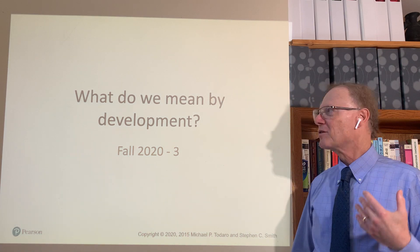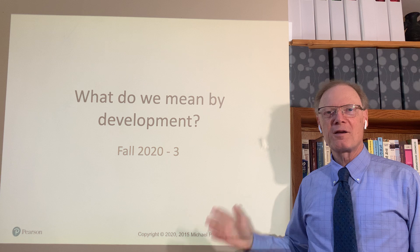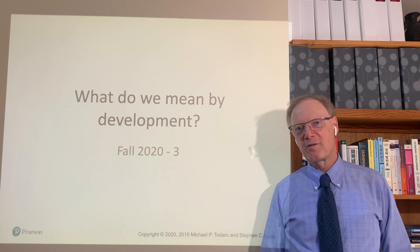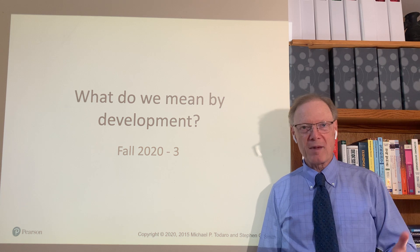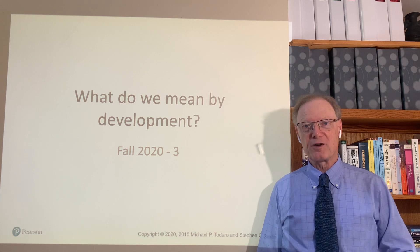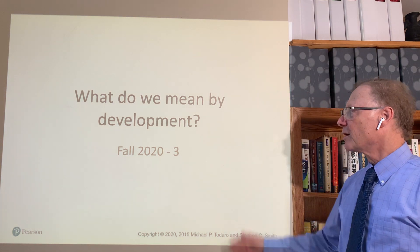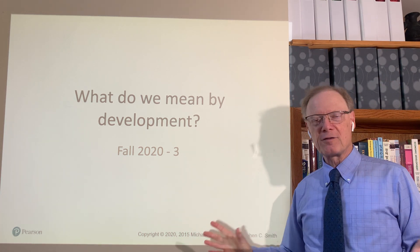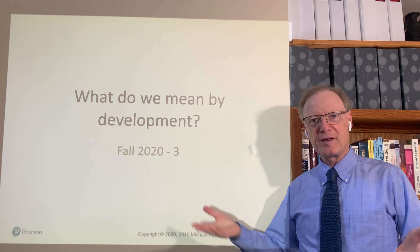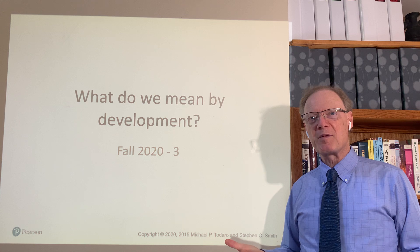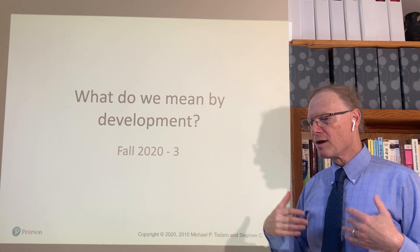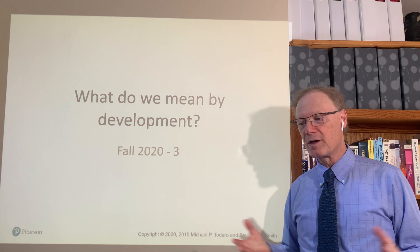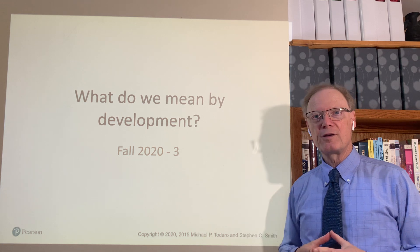Hello everyone. We're now going to continue and conclude for the time being our discussion of what we mean by development, a key part of the first chapter of the textbook. We'll come back later in the course and think about this in terms of some applications. But now we're going to move from the philosophical foundations established in the previous episode — namely Amartya Sen's capabilities to function approach — and see what this might look like with respect to the international development targets agreed by the United Nations.